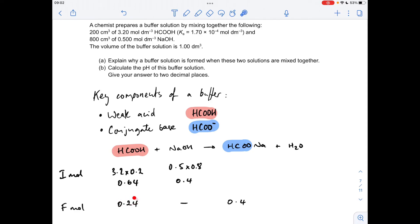So at the end of the reaction, we have got some moles of acid left, 0.24 to be exact, and we have got some moles of salt formed, 0.4. So that's why we've got a buffer because we've got both of the key components present.